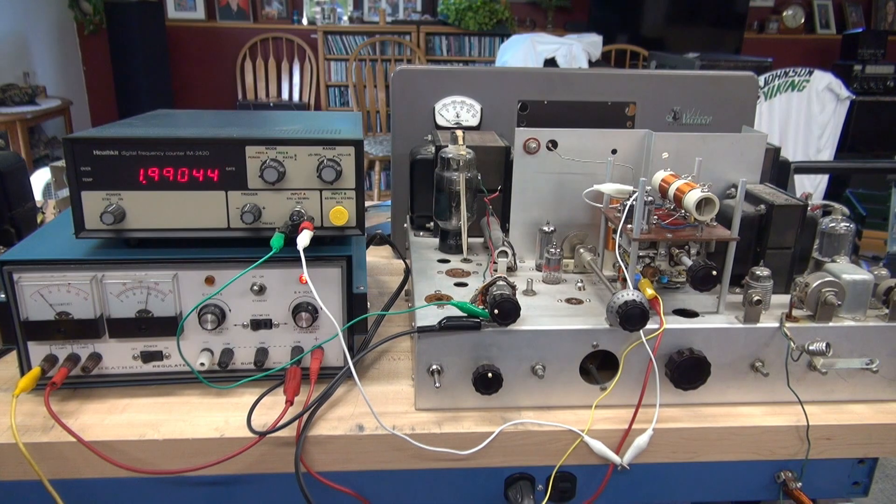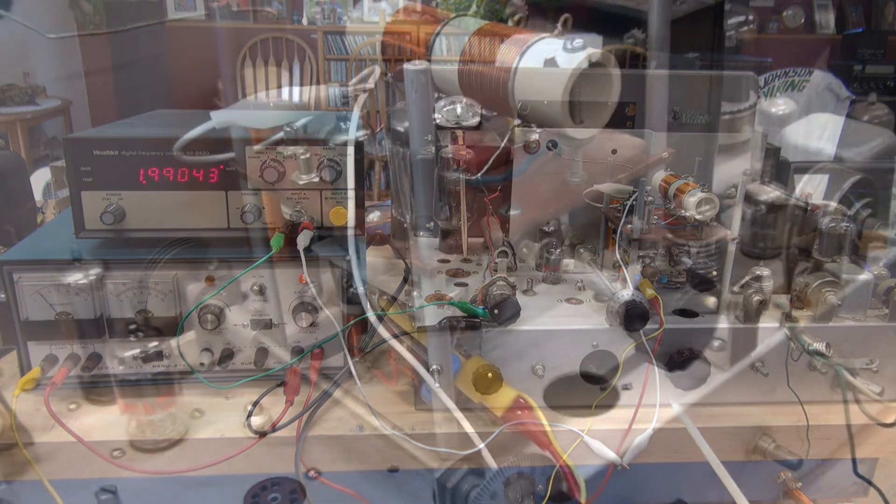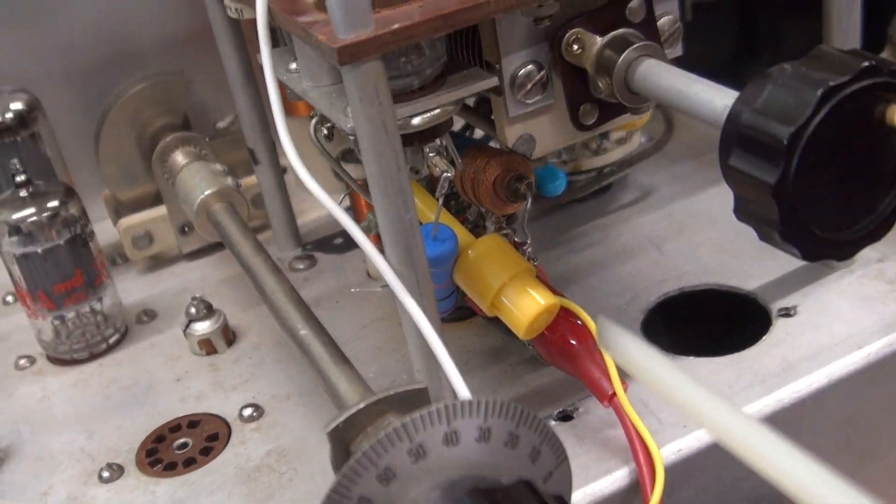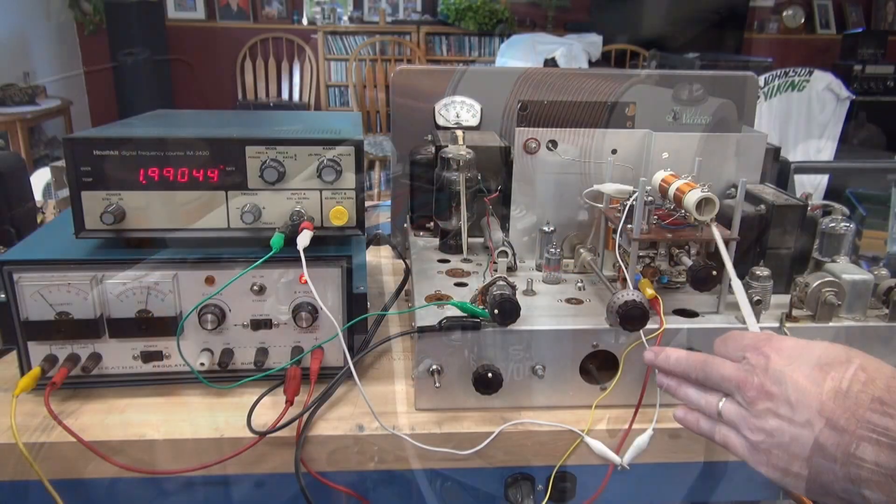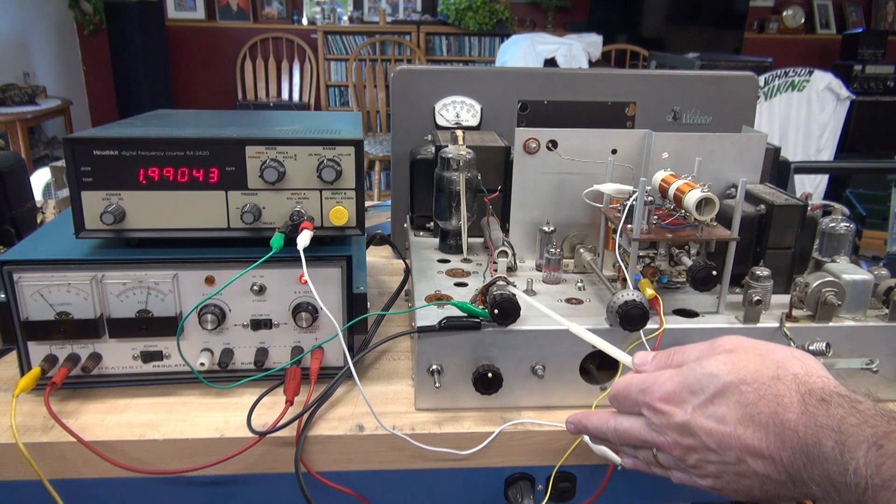Okay, let's get into the procedure. Step one, you're going to disconnect the 6.3 volt AC from the 6AU6 pin 4, that's green wire. So pull that wire away from the tube socket.